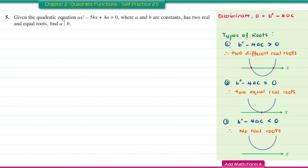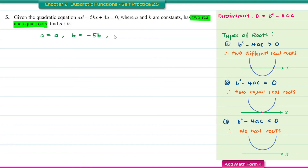Question number 5. Given the quadratic equation Ax squared minus 5Bx plus 4A equal to 0, where A and B are constants, has two real and equal roots. Find the ratio A to B. The discriminant equals 0. So A equals A, B equals negative 5B, C equals 4A. Substituting: (negative 5B) squared minus 4 times A times 4A equal to 0.